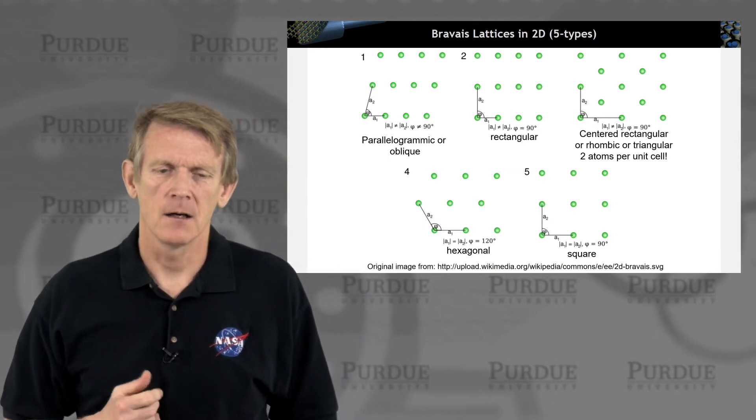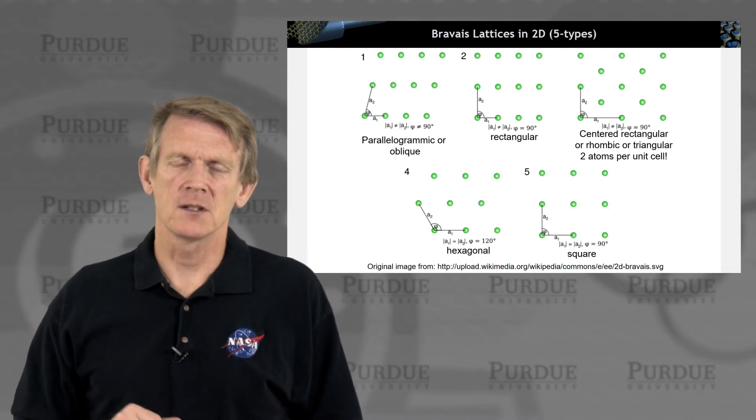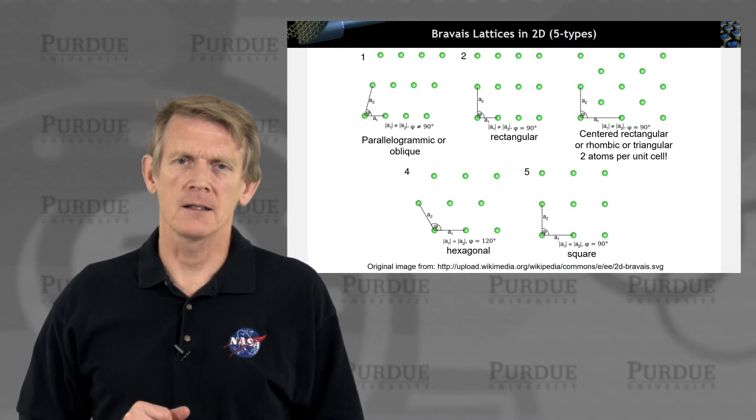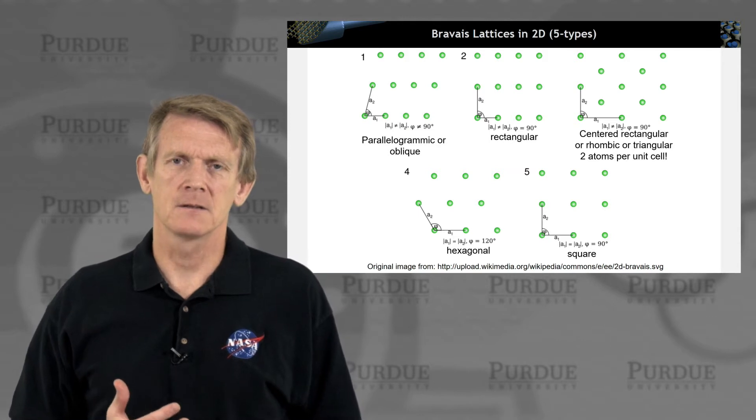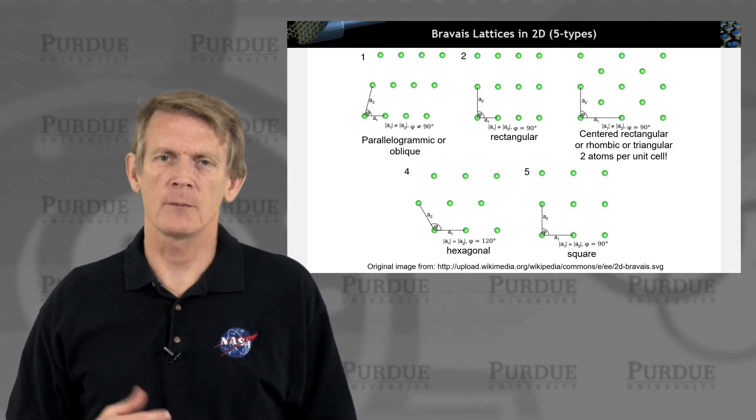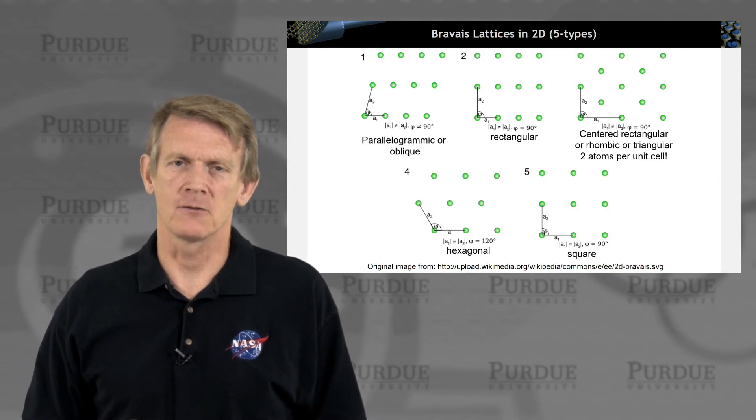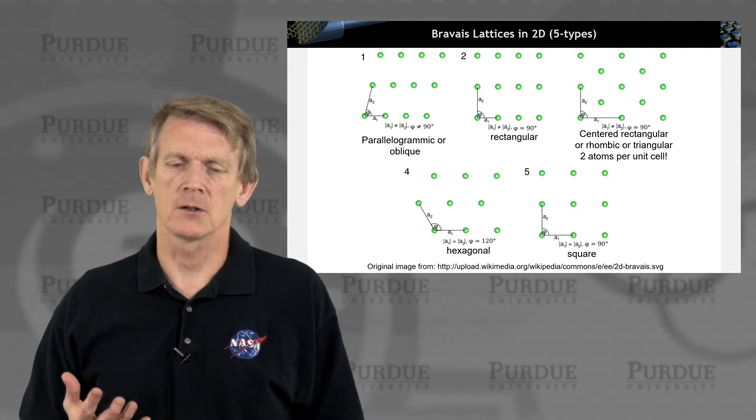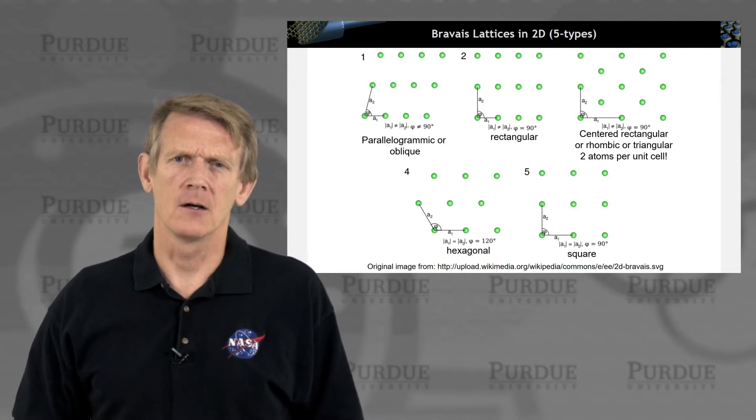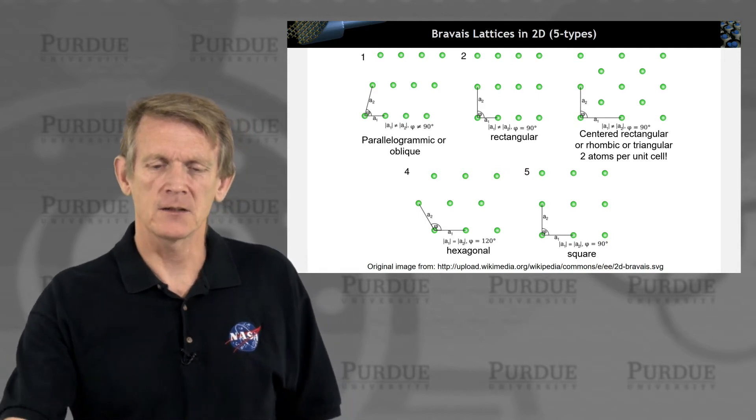So these five Bravais lattices in 2D make up the system in which you can define all repeated 2D lattices. These are the five basis representations that you can arrange objects in 2D in a repeated form. That's sort of a basis set of periodic cells that you can achieve. So that's for 2D.